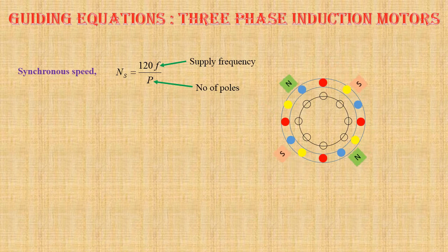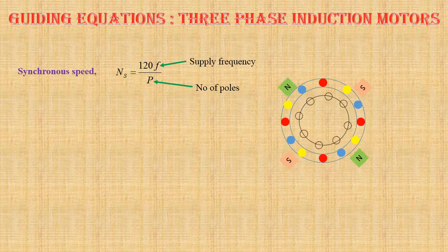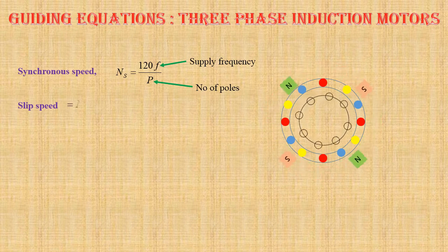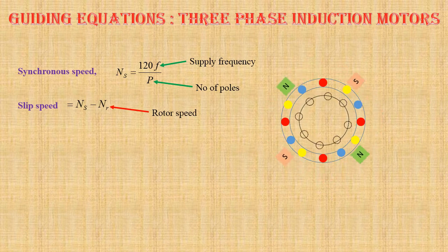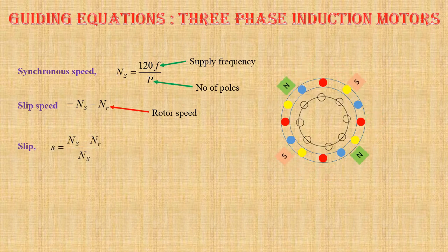Rotor conductors are short-circuited. Therefore, current flows through them and a magnetic field is set up due to rotor current. Due to interaction between stator and rotor magnetic fields, the rotor starts rotating. The difference between the synchronous speed and the actual rotor speed is called slip speed, that is Ns minus Nr, where Nr is the rotor speed. When slip speed is expressed as a fraction of synchronous speed, it is called per unit slip or fractional slip or simply slip: S equals Ns minus Nr divided by Ns.